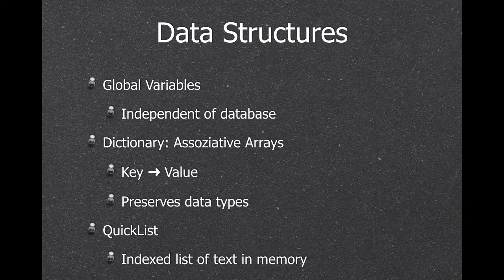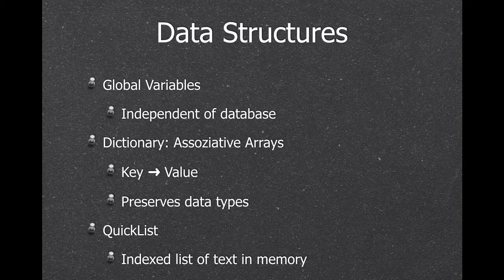We offer global variables that are independent of the file they're used in. We have a dictionary as an associative array — you store data by key-value pairs in memory and lookups are faster than any database query. We also have a quick list to store a list of text in memory where access is much faster than using the GetValue function on a list in a variable, which you'll notice when you have a hundred thousand entries.